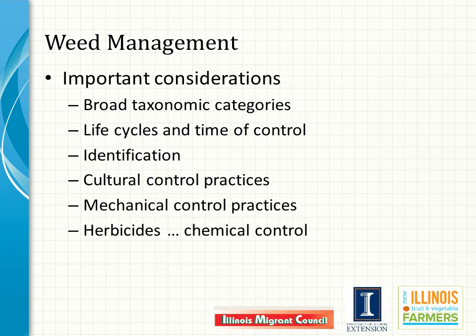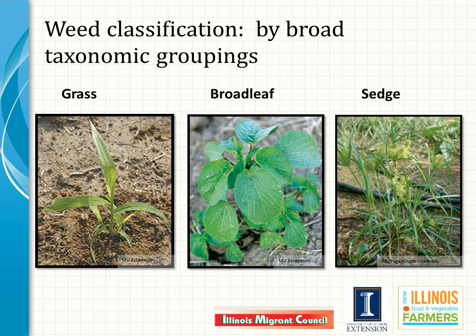Weed management is also part of IPM. At an overview level, important considerations are the types of weeds, their life cycles, specific identification, and cultural, mechanical, and chemical control. Remember that the reasons for weed management include reducing their impact as competitors for water, light, and nutrients; limiting the buildup of the weed seed bank in the soil; and reducing their contributions to the survival and impacts of crop pathogens and insects. Weeds are broadly classified as grasses (monocots), broadleaf weeds (dicots), and sedges. These groups respond differently to physical practices and herbicides that might be used in attempts to control them.